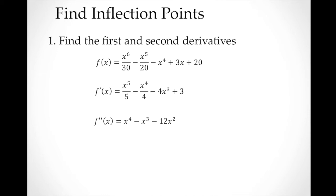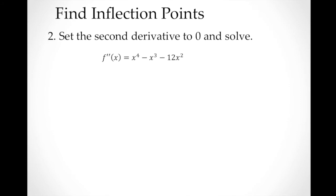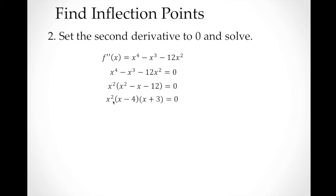Step two: we set the second derivative to zero and solve for x. This gives us x⁴ − x³ − 12x² = 0. We factor out x²: x²(x² − x − 12) = 0. Factoring further: x²(x − 4)(x + 3) = 0. Setting each factor to zero, we get x = 0, x = 4, and x = −3.